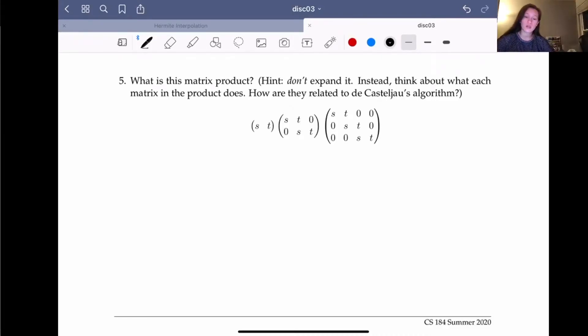What is this matrix product? As for the hint, we're not going to expand it. We're going to realize this is probably the Casteljau's algorithm, since that's also in the hint.